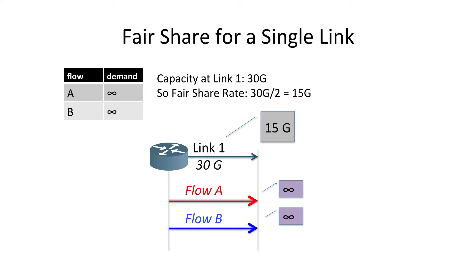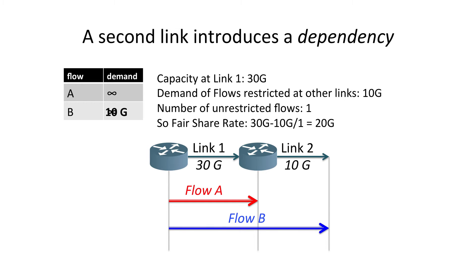Here I have one link and two flows. The link keeps track of what each flow has requested — flows request a demand of infinity because they'll send as much as the link allows. The link looks at the capacity available, the number of flows, and calculates the fair share as half the link capacity. If we add a second link, it gets more complicated: flow B can't advertise infinity to link one because it's restricted to 10 gigabits per second at link two. So it gives a different demand, and when link one calculates the rate, it considers the capacity, demands of bottlenecked flows, and the number of unrestricted flows.